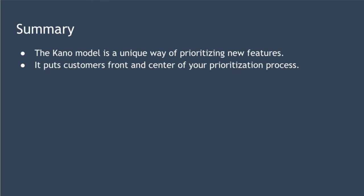So that's it. In summary, the Kano model is a unique way of prioritizing new features that puts customers at the heart of product and service development. It puts customers front and center of your prioritization process, enabling you to prioritize features based on customer satisfaction. Over the medium to long term, this can help the perceived quality of your product improve at the highest rate possible. That's it for this lesson — really hope you enjoyed it and I look forward to speaking to you again soon.